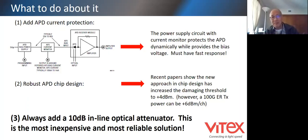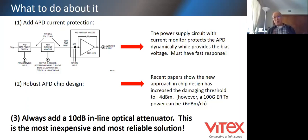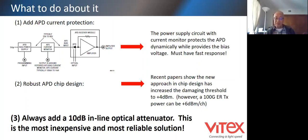A final question: how much does APD voltage change across temperature, say minus 40 to plus 85 degrees? Roughly three to five volts. It cannot be much higher because the voltage required on the APD is between 30 to 35 volts, and you need some margin. The maximum I've seen is a 40-volt converter used in a transceiver, so roughly five volts variation. Thank you. Thanks, Eric, for the very useful information, and thanks everyone for joining.